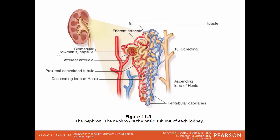Inside each of these sections — the renal pyramids — you'll find a very large number of these units. This is one nephron, the functional unit of the kidney. Each kidney has roughly one million nephrons.